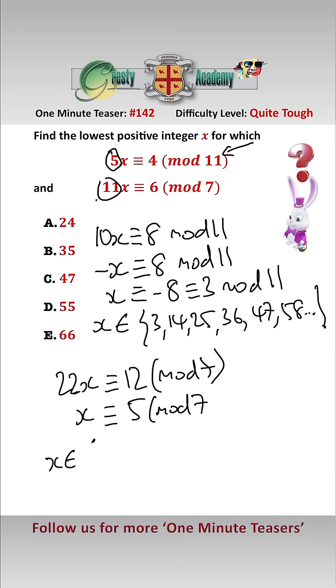That comes out easily, so therefore x is contained in the set 5, 12, 19, 26, 33, 40, 47.